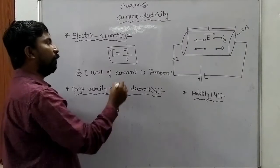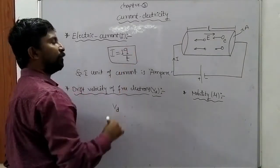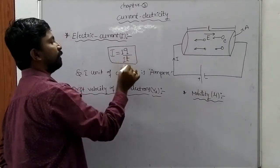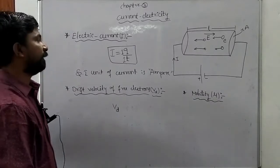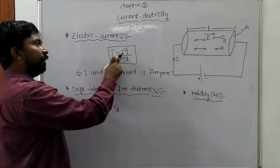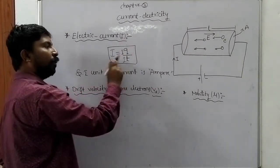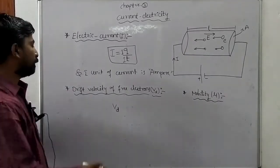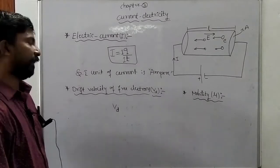One ampere is defined as follows: if one coulomb of charge flows through a conductor in one second, that is called one ampere. The next important concept is drift velocity of the free electrons.